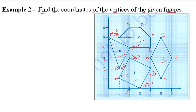For point I: horizontal is 5 and vertical is 5, so I is (5,5). For point J: horizontal is 6 and vertical is 3, so J is (6,3). For point K: horizontal is 5 and vertical is 1, so K is (5,1).